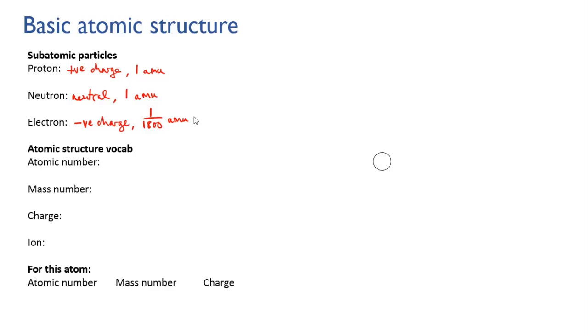We're going to explore that in more detail later in the course. For now, let's draw six protons and seven neutrons in this nucleus just for the sake of argument — that's six protons and seven neutrons.